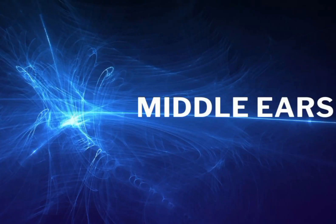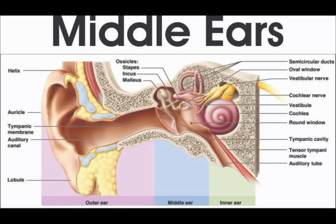Middle Ear: The middle ear consists of three main parts. Ossicles — a chain of three tiny bones: malleus, incus, and stapes — that transmit sound vibrations from the eardrum to the inner ear.